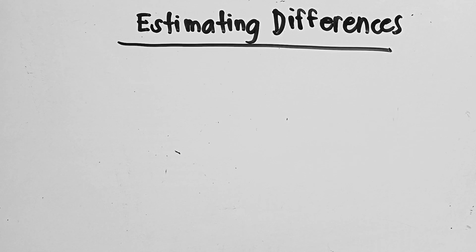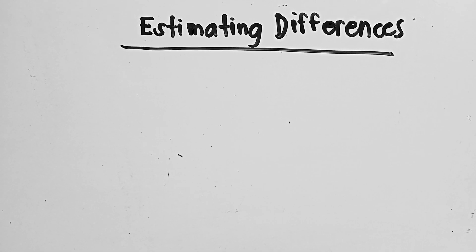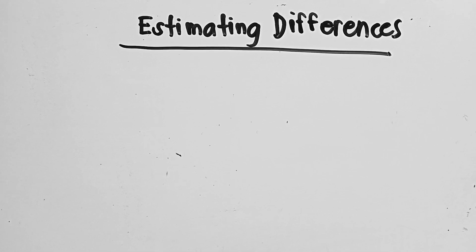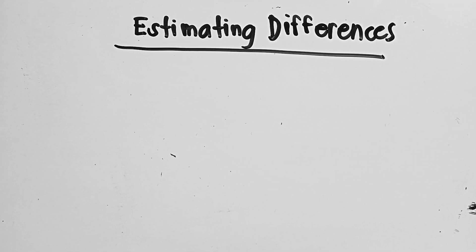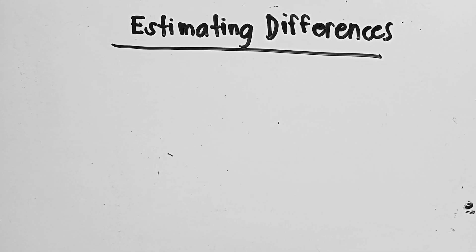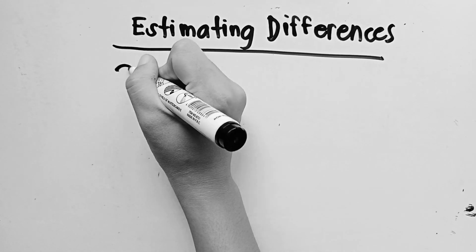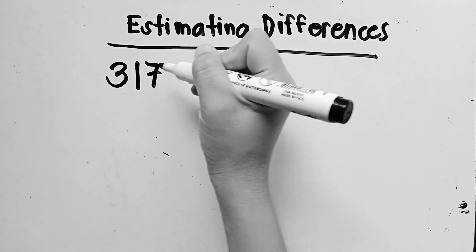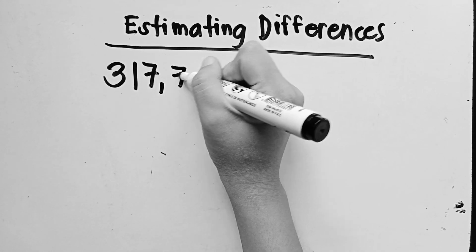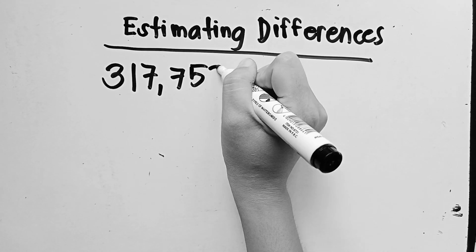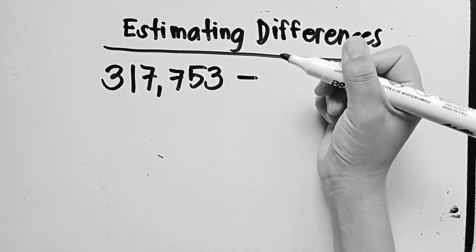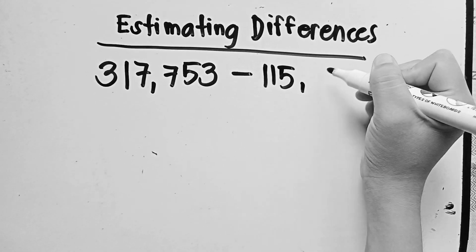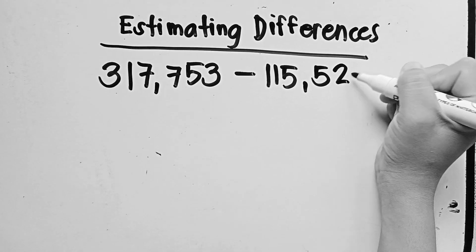For our next example, we have estimating differences. We will use rounded numbers to estimate differences. Give an estimate of the difference of 317,753 subtracted by 115,522.